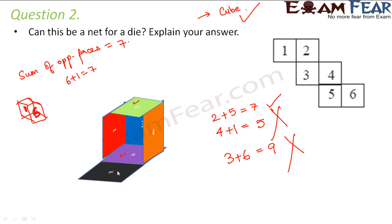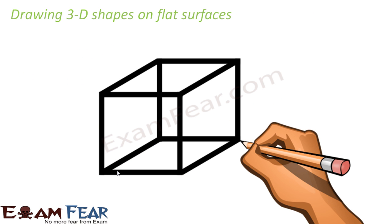Now that we saw how beautifully 2D figures can give rise to three-dimensional objects, we will see how we can draw these three-dimensional shapes on flat surfaces. Whenever we draw anything—a scenery, a person, or anything—we draw them on a piece of paper. The sheet of paper is two-dimensional because it just has two dimensions: the length and the breadth. You do not have the third dimension.